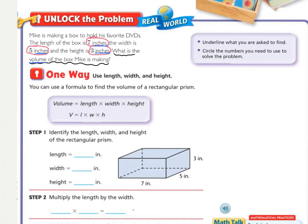You should have underlined what is the volume of the box Mike is making. Circled 7 inches, 5 inches, 3 inches. And then I underlined inches so that I knew my label. And then I underlined volume so that I knew that I had to have it as cubic inches.